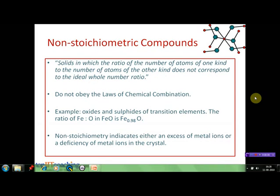Our next topic is non-stoichiometric compounds. Non-stoichiometric solids can be defined as those solids in which the ratio of the number of atoms of one kind to the number of atoms of the other kind does not correspond to the ideal whole number ratio. Since their ratio is not a whole number, they do not obey the laws of chemical combination, which dictates a simple whole number ratio among the atoms of different kinds.